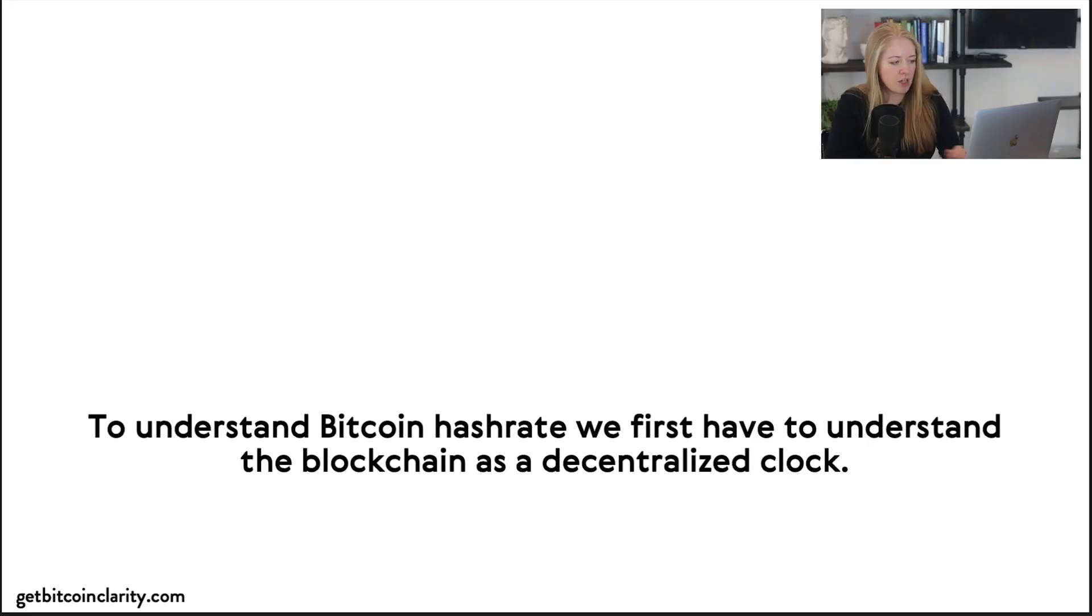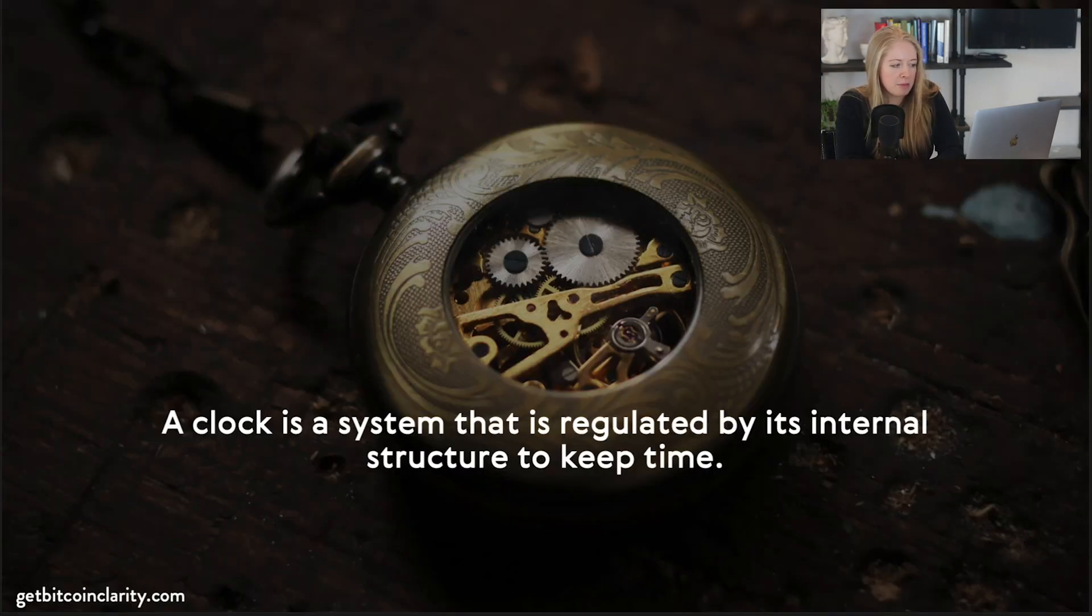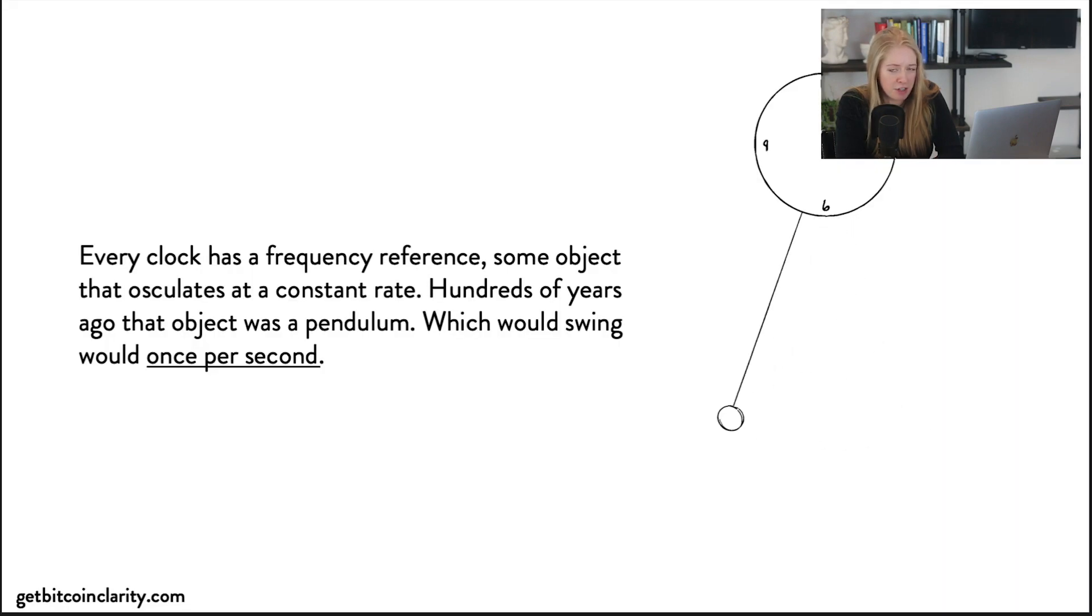We're going to start way back at the concept of a time chain. To understand hash rate, we first have to understand the blockchain as a decentralized clock. A clock is a system that's regulated by its internal structure to keep time.